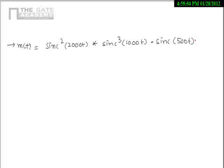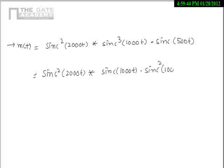This is the next question: sinc squared 2000t convolved with sinc cubed 1000t, multiplied by sinc 500t. We need to find the Nyquist frequency of this signal. We know the Fourier transform for sinc and sinc square, so let us express sinc cubed 1000t in terms of sinc and sinc square.